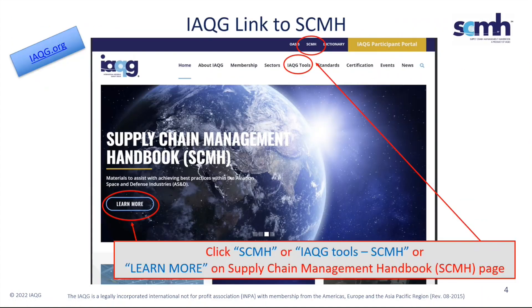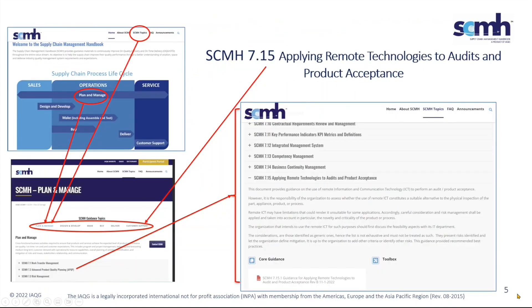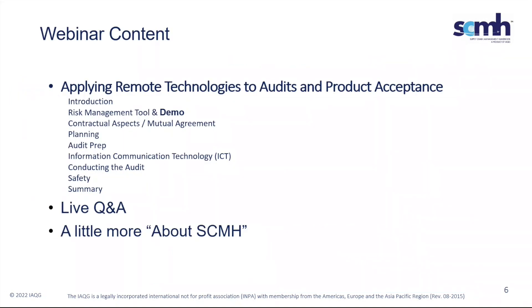Here's the IAQG.org site — click on SCMH and it takes you right to the guidance. There are several topic links: Plan and Manage, Design and Development, Make, Buy, Deliver, Customer Support — all hot links to lists of topics. Under Plan and Manage you'll find 7.15, Remote Technologies. We'll discuss the topic, go through each element, show a demonstration of the risk management tool, then go into live Q&A.